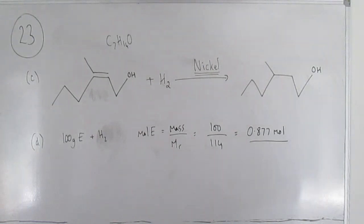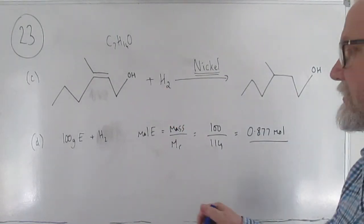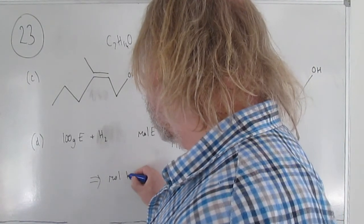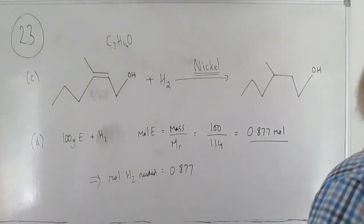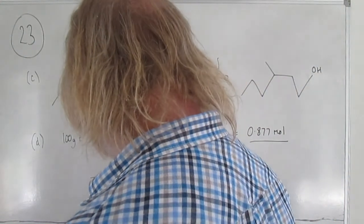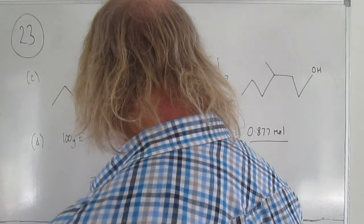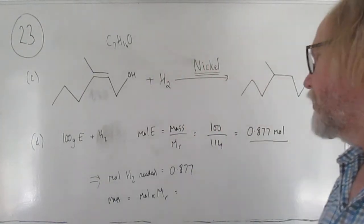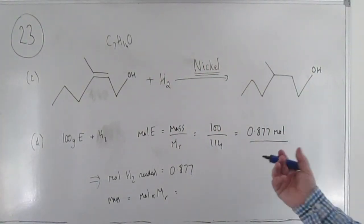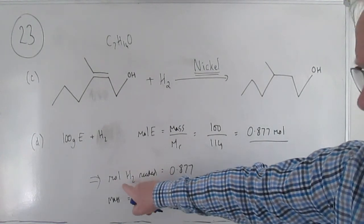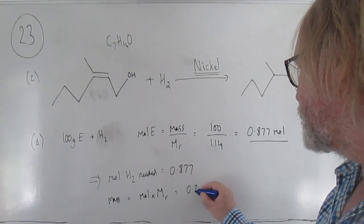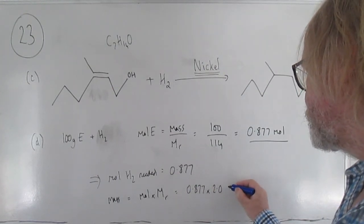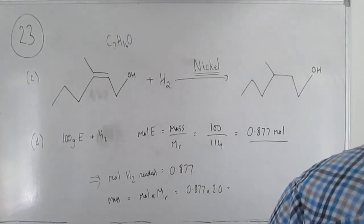From the equation, each mole of compound E requires one mole of H2, so moles of hydrogen needed = 0.877 mol. Then mass of H2 = moles × MR. A common error here: don't use atomic mass 1 for H — we're talking about H2, so the molecular mass is 2. So mass = 0.877 × 2.0 = 1.75 g.